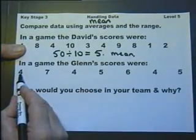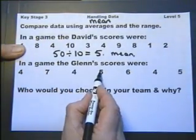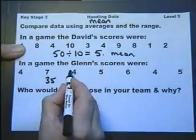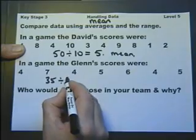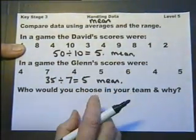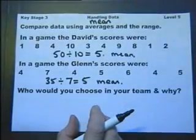Let's look at Glenn. Add them up. 11, 15, 20, 30, 35. 1, 2, 3, 4, 5, 6, 7. Well, that's not a lot of help because they both score the same when it comes to an average.